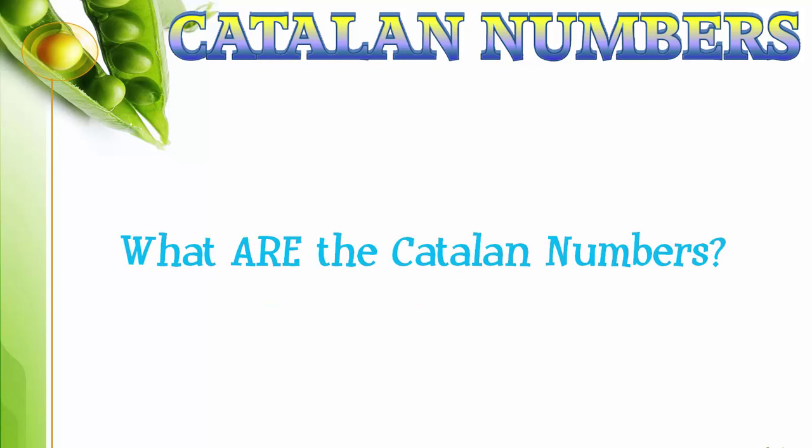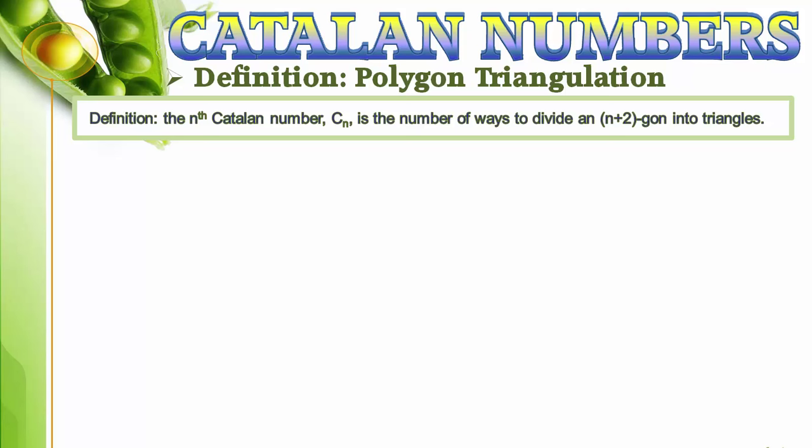First of all, what are the Catalan numbers? We define the nth Catalan number, C sub n, as the number of ways to divide an n plus 2 gone into triangles.